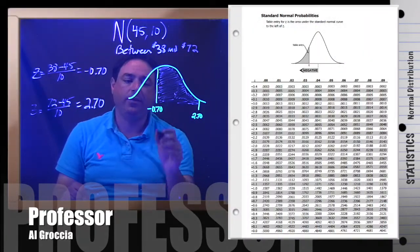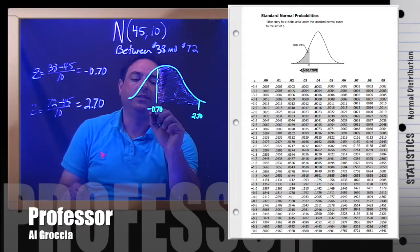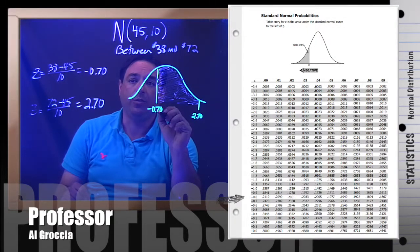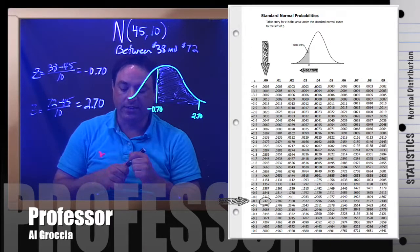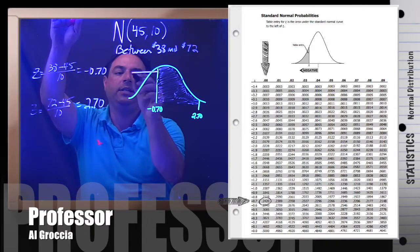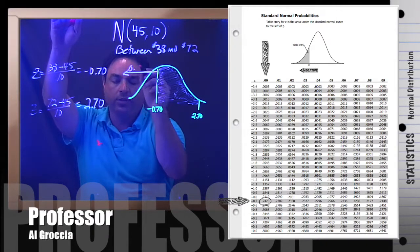So we go to our table, the negative side, we look up 0.7. That tells us the row. And then zero will be the first column. And the table tells us the percent below. So from this point down would be 0.2420.